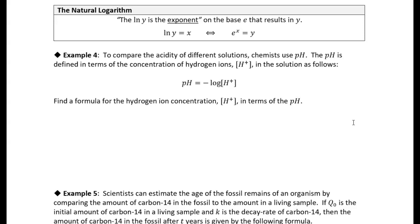All right, so this first example is just talking about pH. To compare the acidity of different solutions, chemists use pH. And pH is defined in terms of the concentration of the hydrogen ions in the solution. So if you know the hydrogen ion concentration in a solution, you can compute the pH by taking the negative log, base 10 log, of the hydrogen ion concentration in moles per liter.